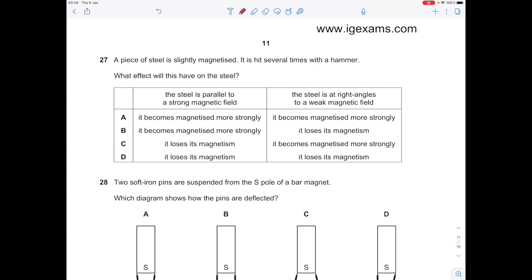A piece of steel is slightly magnetized. It is hit several times with a hammer. What effect will this have on the steel? Remember, steel is a hard magnetic material which means it retains its magnetism. If you hit it when the steel is parallel to the strong magnetic field, it becomes magnetized more strongly.